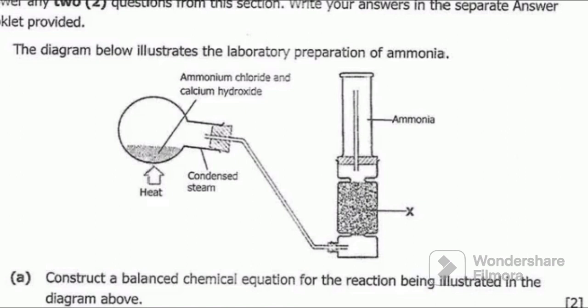Question E: state two uses of ammonia. Ammonia is used to make explosives. Ammonia is used to make nitric acid. Ammonia is also used to make chemical fertilizers — just state any two of these.